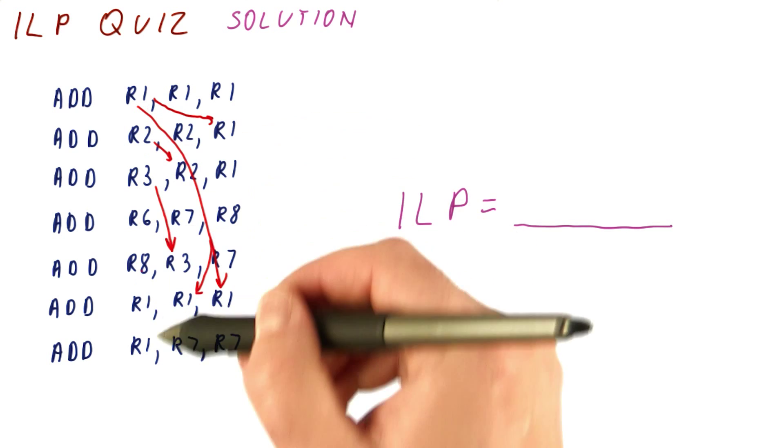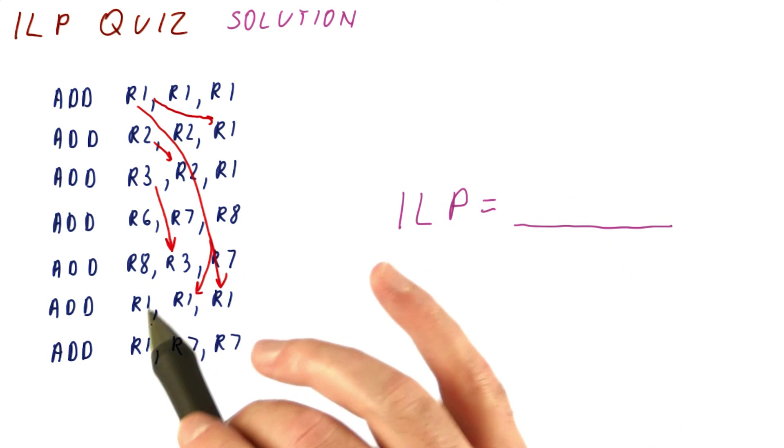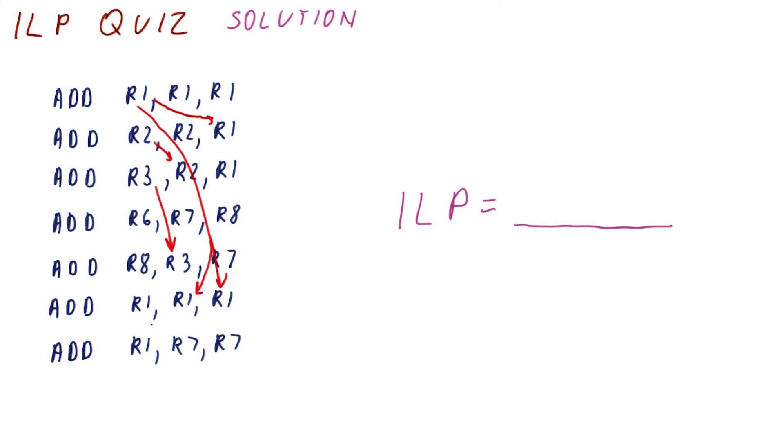Again, we are overwriting R1 here, and so on, but that doesn't matter because after renaming all of that would be gone. So now it's time to figure out what can execute in which cycle.